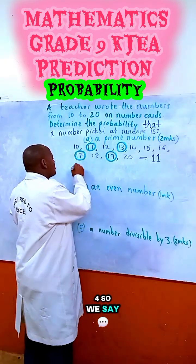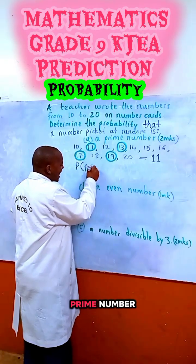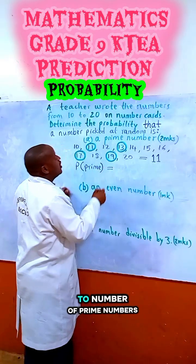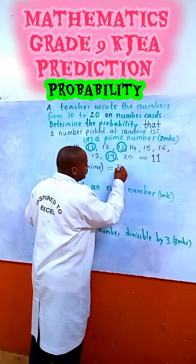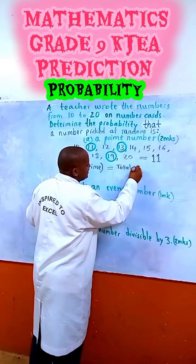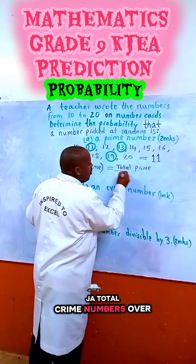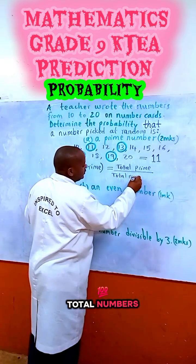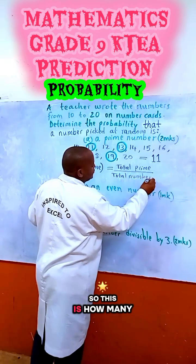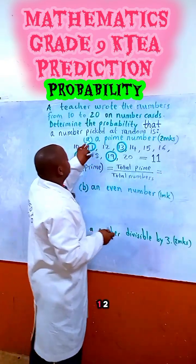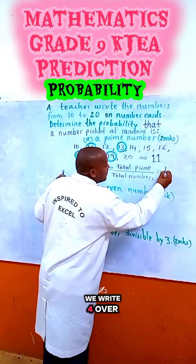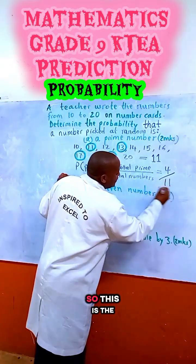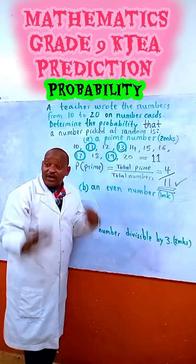So, the probability of picking a prime number equals the total prime numbers over total numbers. We have 4 prime numbers over a total of 11. So, the probability is 4 over 11. That is the correct answer — very simple.